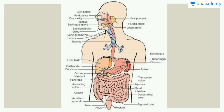Here we've got the digestive tract, or the alimentary tract. Let's start off with the mouth. Here we've got the soft palate right on top, the hard palate underneath it, and then the oral cavity from where you ingest your food. We've got a very muscular organ here — the tongue — which helps to mix food inside the mouth. We also have salivary glands which create saliva.